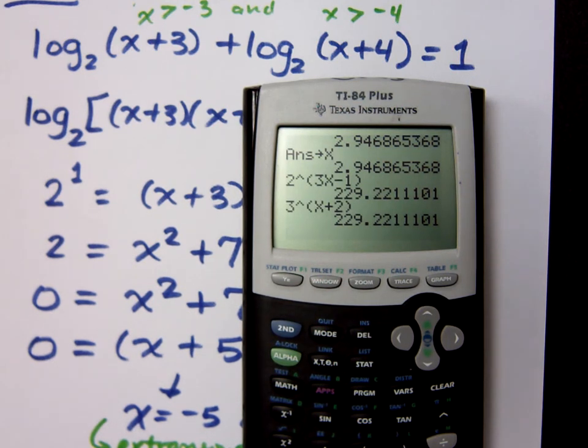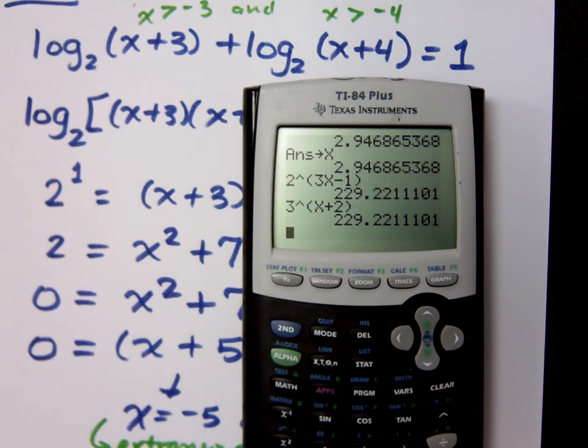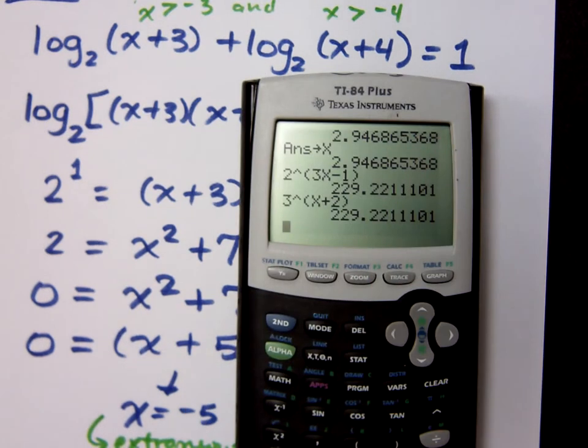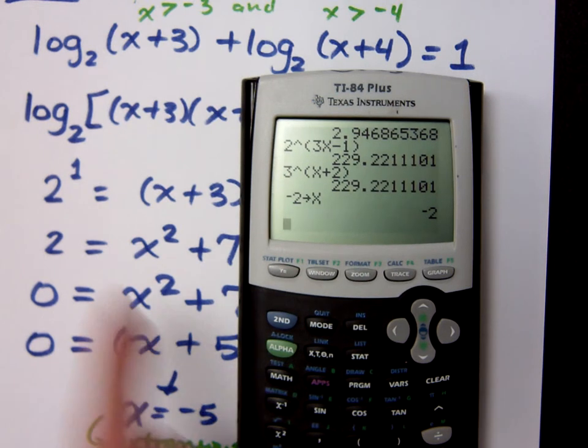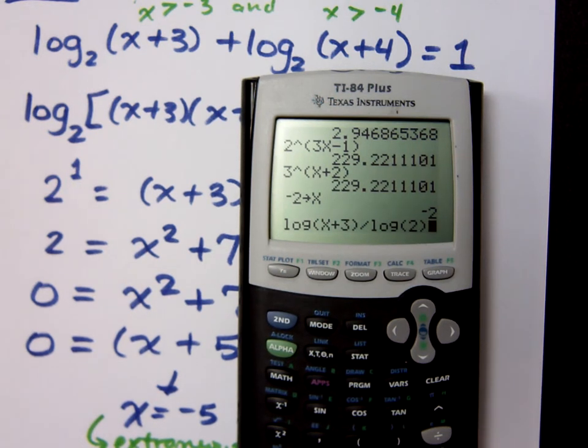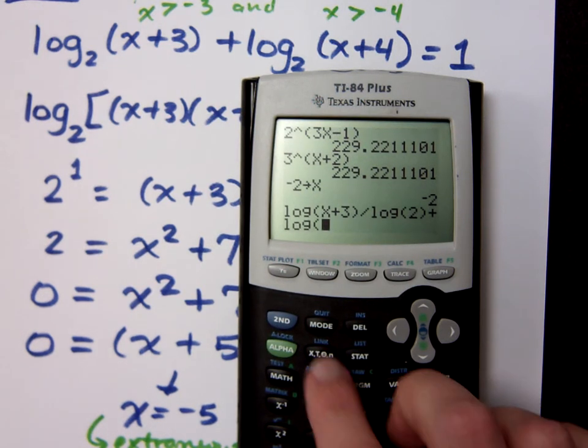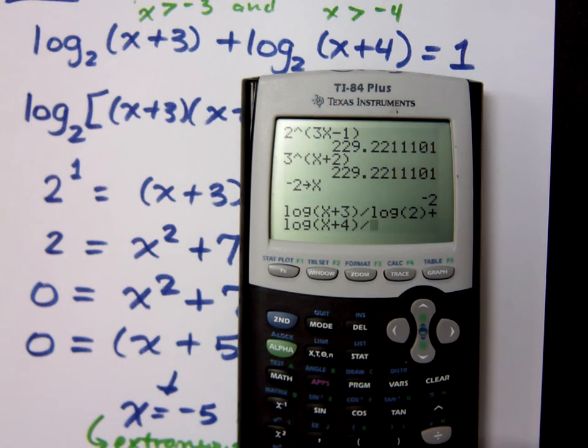He was asking how do we put it in the calculator if it's a different base? We have to use the change of base theorem. So we said that negative 2 is the answer. So if I take negative 2 and store it into x, I need to evaluate this expression. So log of x plus 3 divided by the log of 2 plus the log of x plus 4 divided by the log of 2. That's how you're going to be able to type in log with the base 2. You use that change of base theorem. It's not pretty.